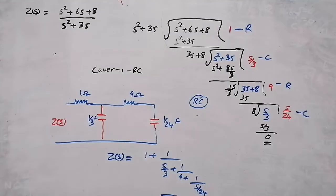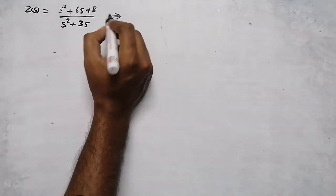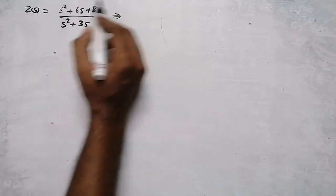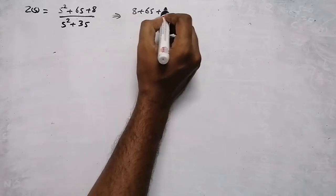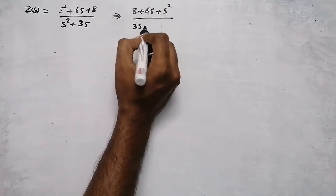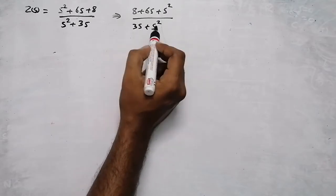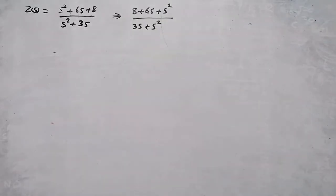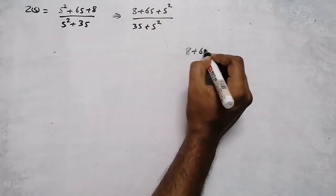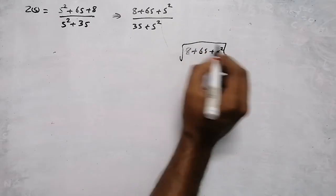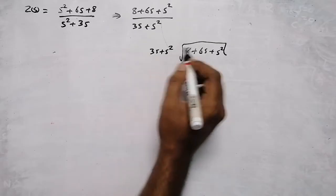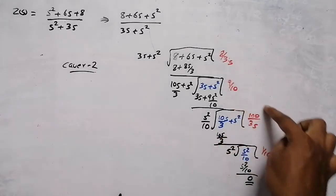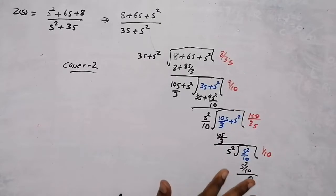Now for Cauer 2. First, rearrange the impedance function in ascending order of powers of s. Write it in reverse order: (8 + 6s + s²) divided by (3s + s²). The ascending order goes s¹, s², s³, and so on. Then perform the long division with numerator 8 + 6s + s² divided by 3s + s². This gives the steps and values for the Cauer 2 network.